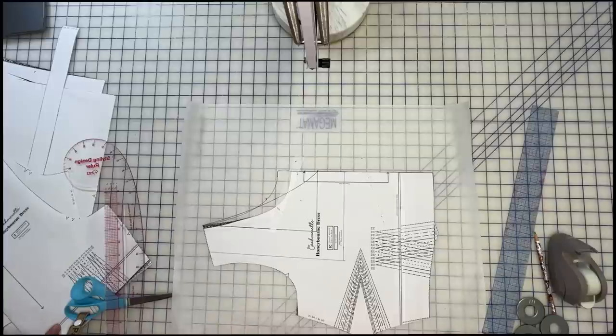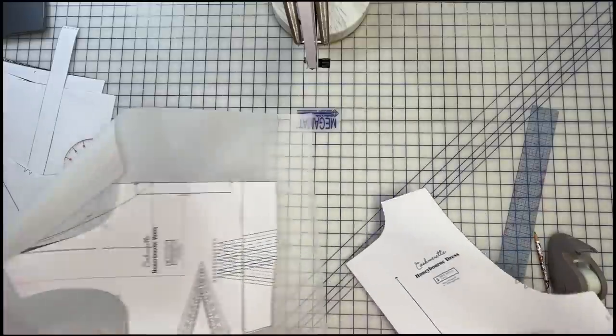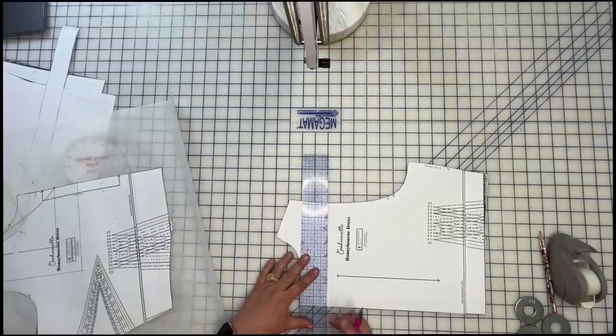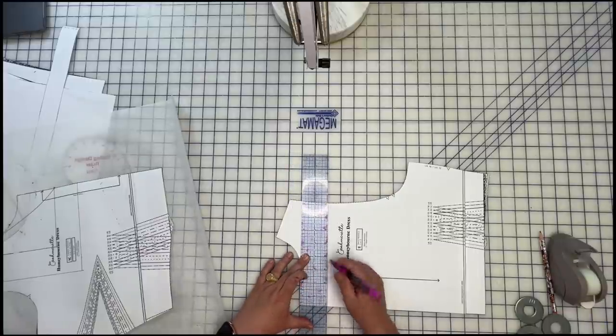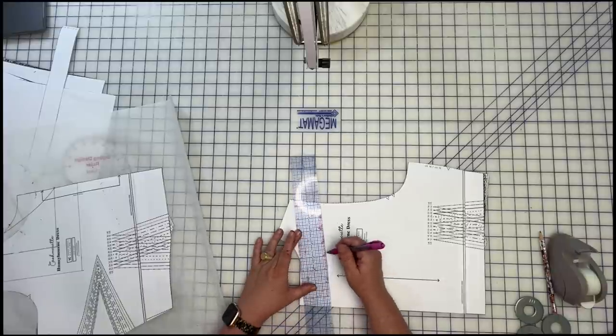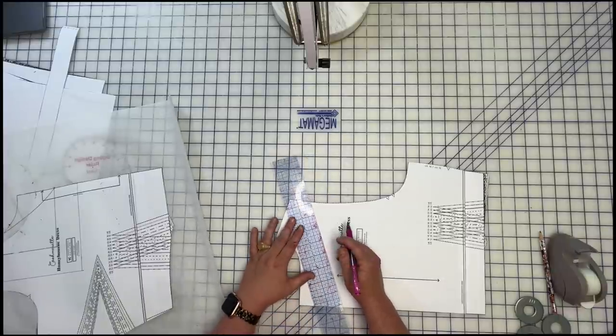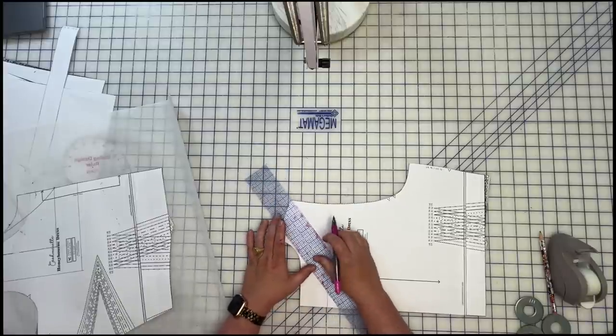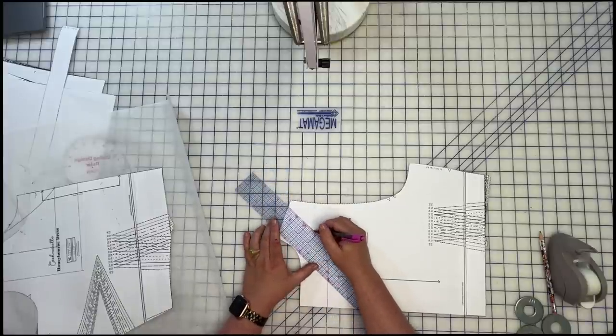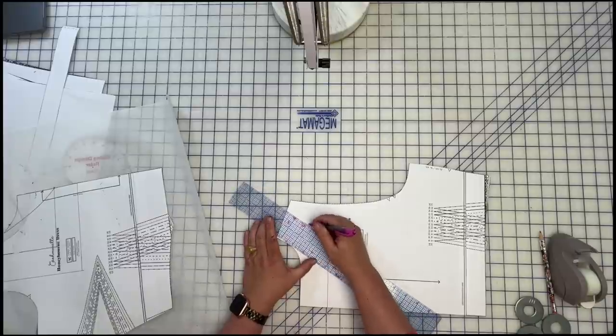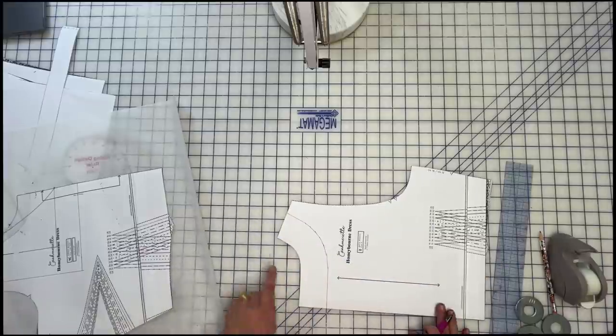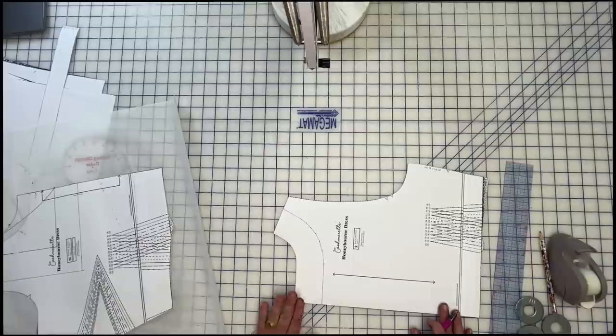And then for the back, same thing, we're going to do two inches. Again, I'm going to be lining mine, my bodice fully. And because my fabric's cotton, I think I'm just going to go with a cotton for my lining. Just like that. So now I'll trace the neck edge down along this pink line and the shoulder edge. And that would be my back facing.